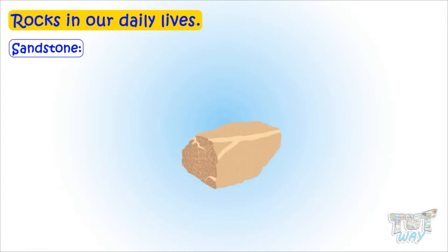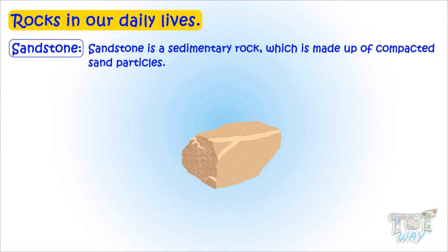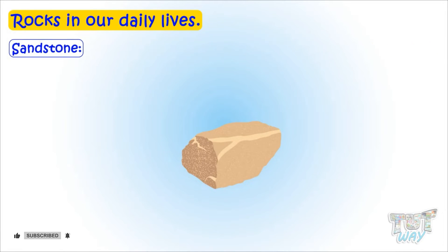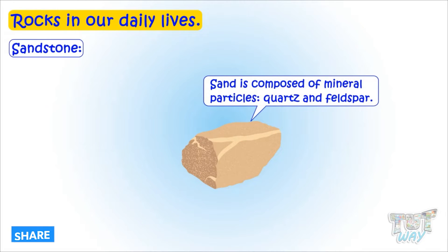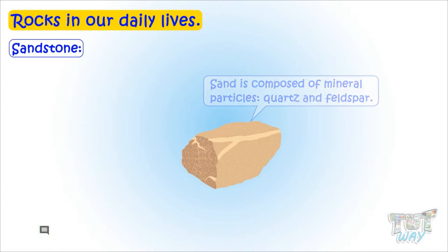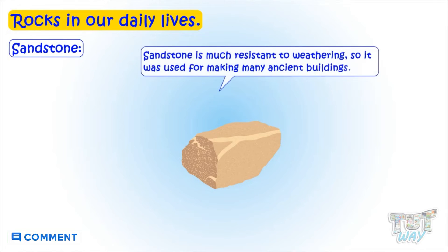Sandstone is a sedimentary rock which is made up of compacted sand particles. Sand is composed of mineral particles — quartz and feldspar. Sandstone is much resistant to weathering, so it was used for making many ancient buildings.